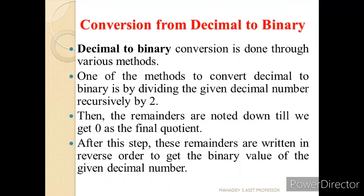First let us see the conversion from decimal to binary. One method to convert a decimal number to binary is dividing the given decimal number recursively by two, because the base is two. The remainders are noted down till we get the remainder as zero at the final step. These remainders are then written in reverse order to get the binary value.